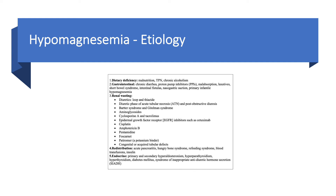A newer cause is epidermal growth factor receptor inhibitors such as cetuximab — these cancer medications can cause hypomagnesemia and this is a common test question. For example, a patient on cetuximab presents with recalcitrant hypokalemia — the next step is to check magnesium. Other renal-wasting drugs include cisplatin, amphotericin B, pentamidine, and foscarnet. Patiromer, a potassium binder, not only binds potassium but also magnesium — this problem does not occur with the newer potassium binder sodium zirconium cyclosilicate. Congenital or acquired tubular defects can also cause hypomagnesemia.